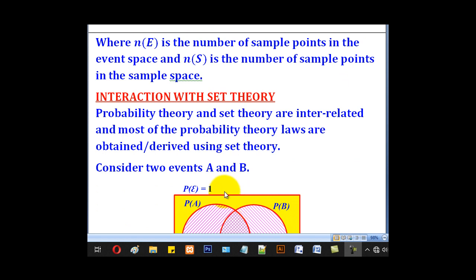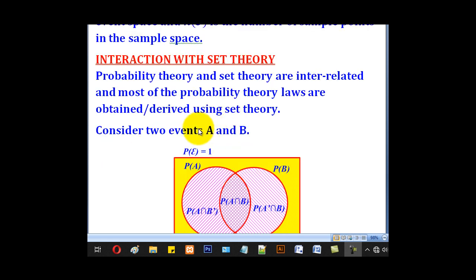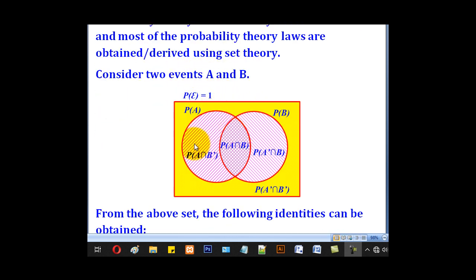Under probability theory, there is a relationship between probability theory and set theory. Consider two events A and B represented on a Venn diagram. Under probability of A, we have probability of A∩B complement and probability of A∩B. Under probability of B, we have probability of A complement ∩ B and probability of A∩B. Outside, we have probability of A complement ∩ B complement. All these added together equal the total probability, which is 1.